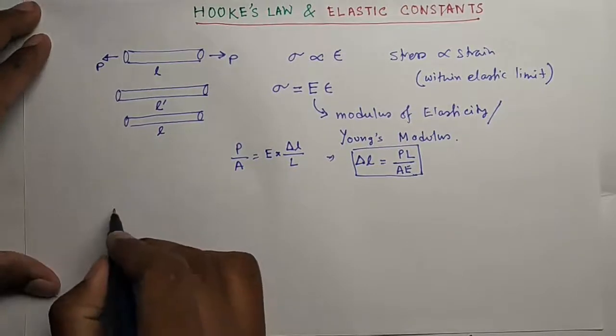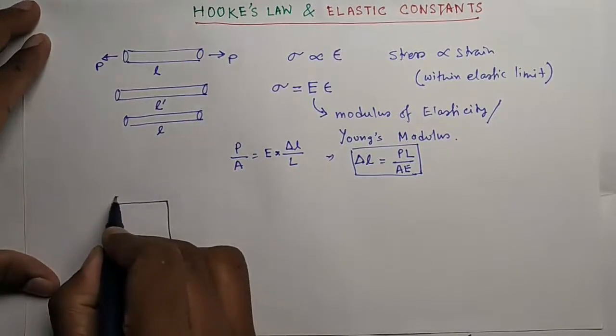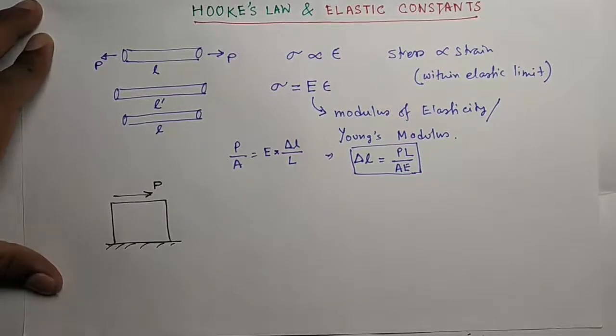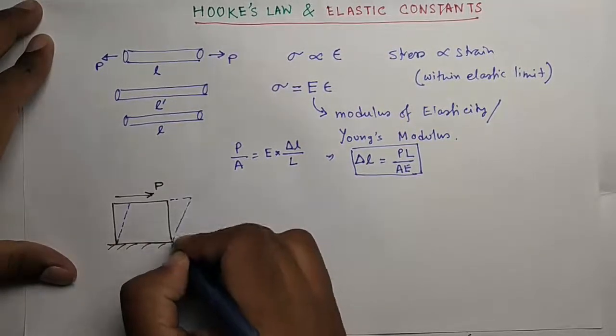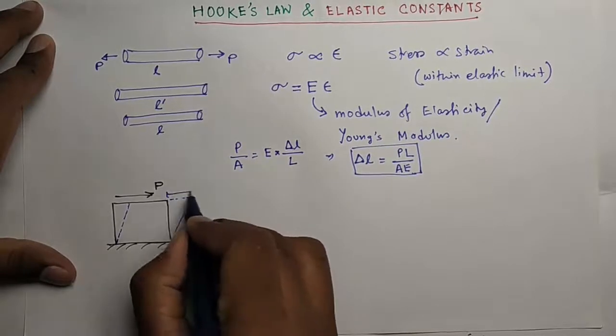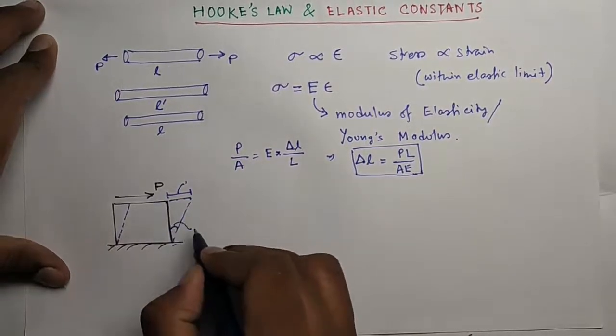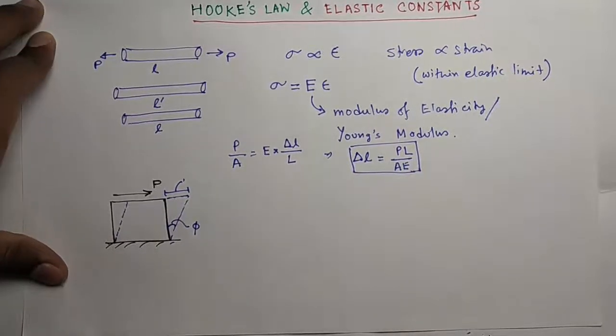Now coming to shear stress. You're applying force tangential to the surface, the force is P, and as a result of this force the body gets deflected like this. So this change in dimension, this angle phi, is denoted as shear strain.